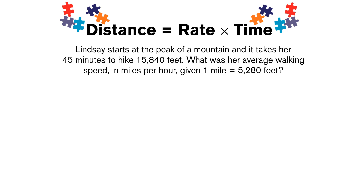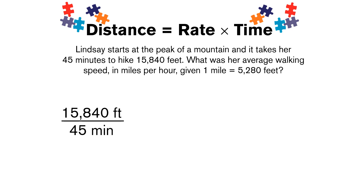The first problem says Lindsay starts at the peak of a mountain and it takes her 45 minutes to hike 15,840 feet. What was her average walking speed in miles per hour, given one mile equals 5,280 feet? We need to find speed, which is distance over time. We have 15,840 feet over 45 minutes, which gives units of feet per minute, but the problem asks for miles per hour, so we need to convert.